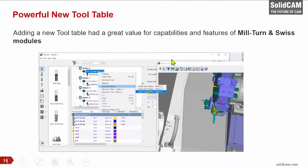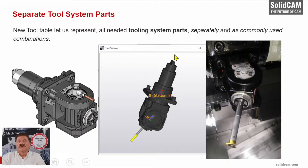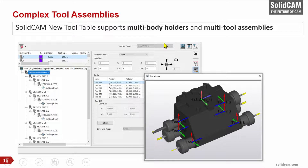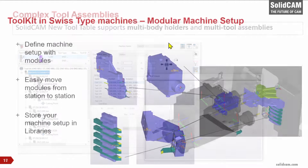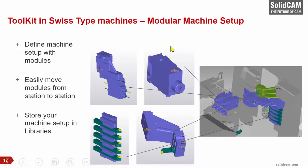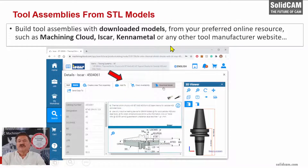Let me quickly recap some of the SolidCAM 2021 highlights. We have our powerful new tool table with great capabilities especially for Mill-Turn and Swiss modules. It enables you to generate all tooling system parts separately or as commonly used combinations. We can build multi-body holders and multi-tool assemblies, and we support Swiss-type tools best with the new tool table. You can build tool assemblies from STL models downloaded from Machining Cloud, Escog, KenaMetal and others.